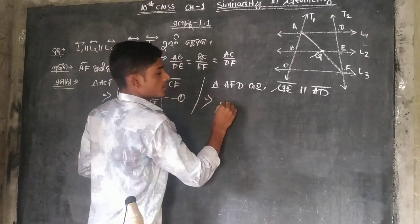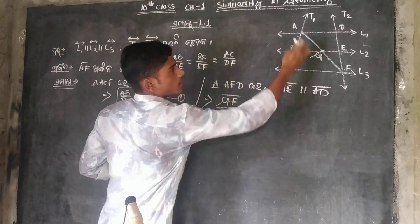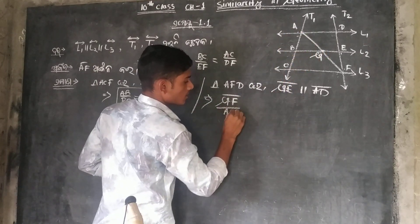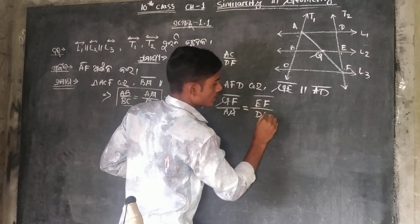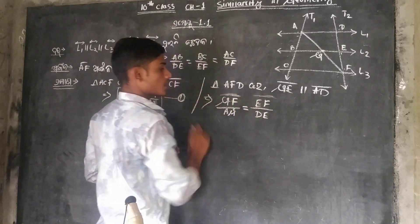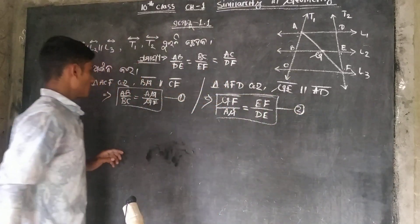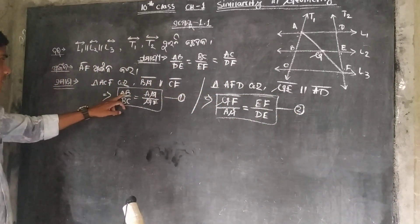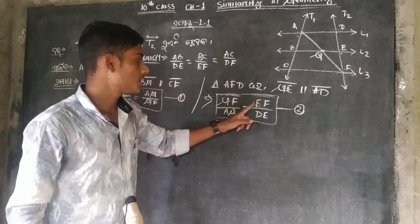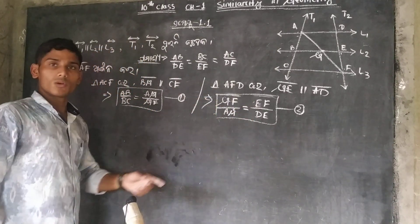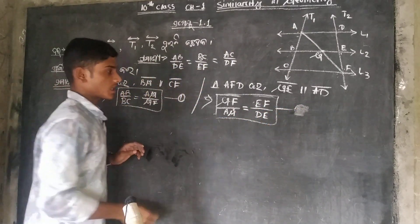So, how does GF by HG equal EF by DE? Let's give equation 2. FB by BC, HG by GF. So GF by HG equals EF by DE. If we give equation 1, we will test equation 1.